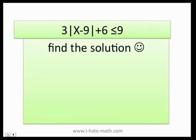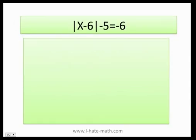Finally, I have the last one, which is absolute value of x minus 6, minus 5, equals negative 6. Now I need to clean it. So I'm going to get absolute value of x minus 6. When I pass the 5 to the other side, I'm going to get negative 6 plus 5. Now negative 6 plus 5 equals negative 1.